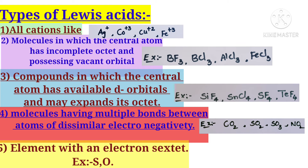Compounds in which the central atom has available d-orbitals and may expand its octet also act as Lewis acids. For example, SiF4, SnCl4, and TeF4. And molecules having multiple bonds — double bonds and triple bonds — between atoms of dissimilar electronegativities also act as Lewis acids. For example, CO2, SO2, SO3, and NO2 contain multiple bonds such as C=O and S=O between atoms of different electronegativities.